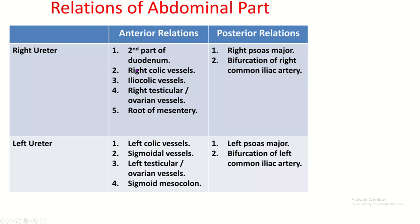In front of the right ureter, the following structures are present: the second part of the duodenum, or at the junction of the second and third parts of the duodenum; the right colic vessels; the ileocolic vessels; the right testicular vessels; and the root of the mesentery. In the case of the left ureter, the left colic vessels, sigmoidal vessels, and sigmoid mesocolon are present.